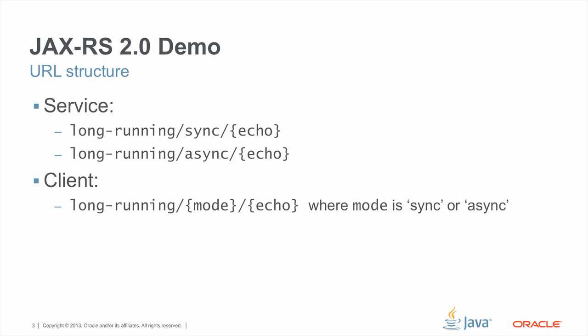Each of the URLs has a parameter, both on the service and on the client. The difference is that on the client we also have a parameter for the mode. We're going to use the same client to access both types of services, and therefore we have a mode that we need to specify — either sync, if we want to access the synchronous service, or async, if we want to access the asynchronous service.